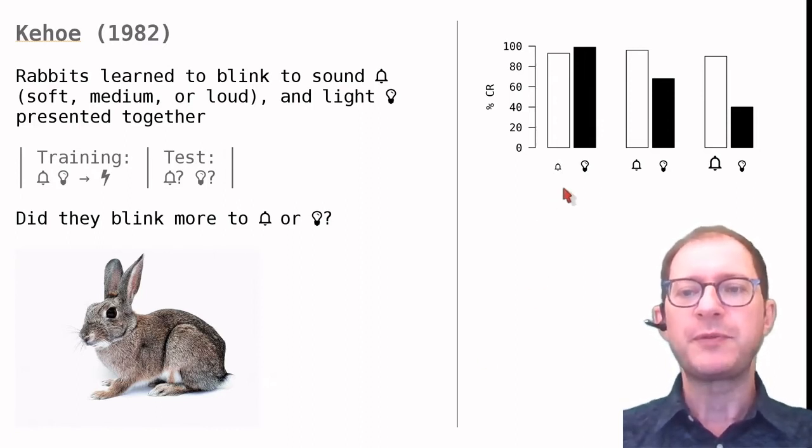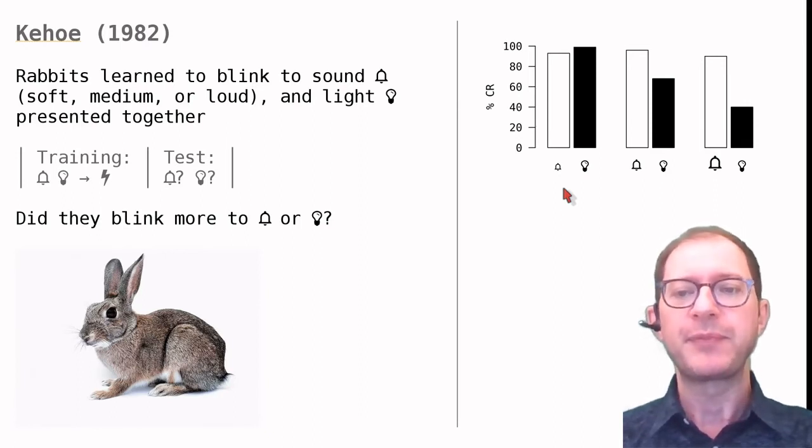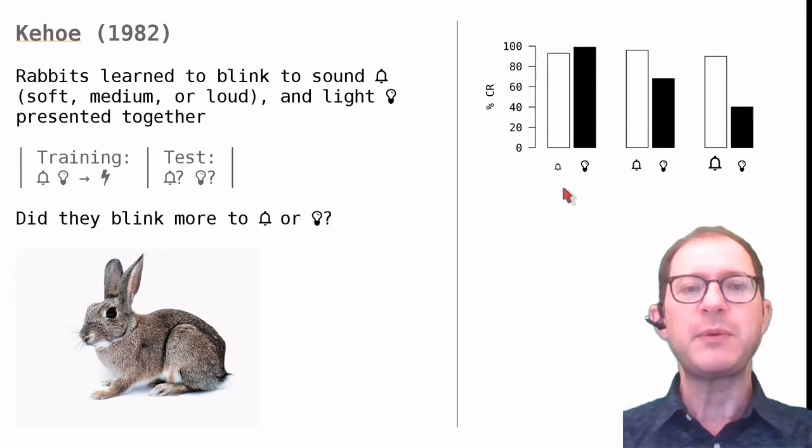This is the group of rabbits trained with the soft tone. This tone's loudness was 85 decibels. This is still quite loud, like a hair dryer or a blender going. Rabbits in this group, as we can see, responded approximately equally to the tone and the light, blinking about 90-95 percent of the time to each. They did not show more learning for either.